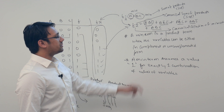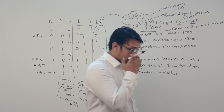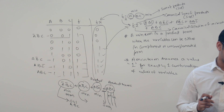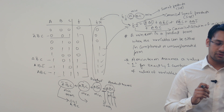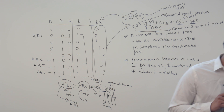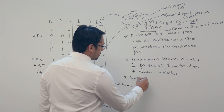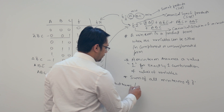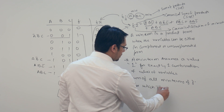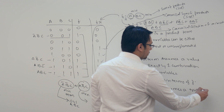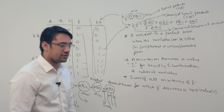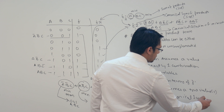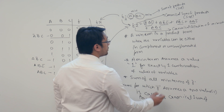The sum of all min terms of a function f for which f assumes a true value (value 1) is called as canonical sum of products. This is a formal definition. So this expression is presently a canonical sum of product.